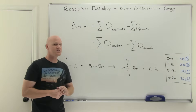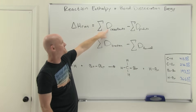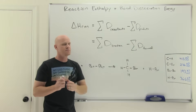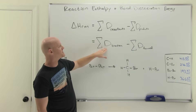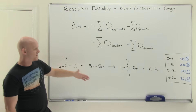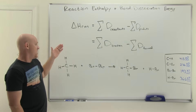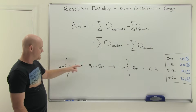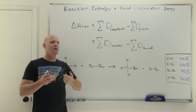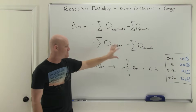Now we're going to use these bond dissociation energies to actually approximate delta H of a reaction. The way this works — bond dissociation energies are symbolized by the letter D — you can do the sum of all the reactant bond dissociation energies minus the sum of all the product bond dissociation energies, and that totally works. But oftentimes you can save yourself some time if you just do the bond dissociation energy of the bonds broken minus the bonds formed instead.